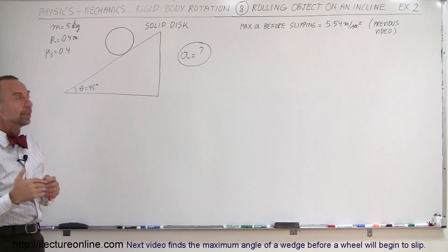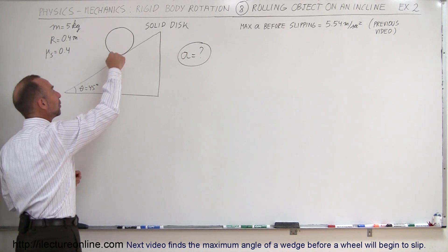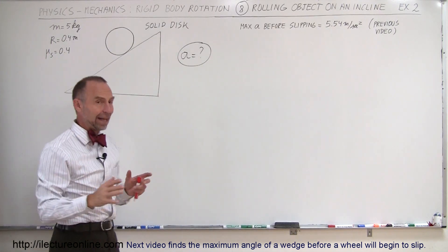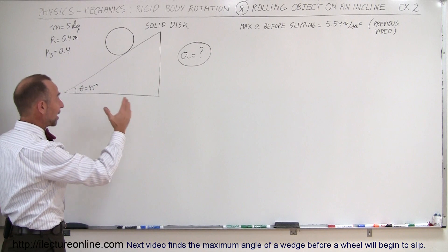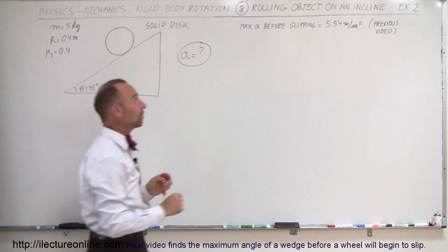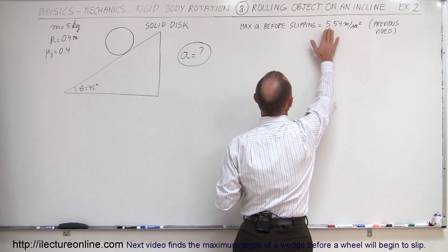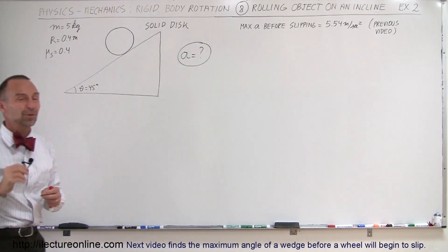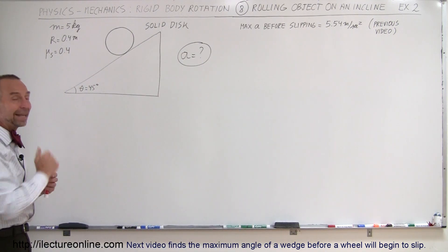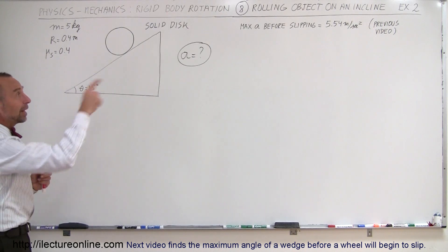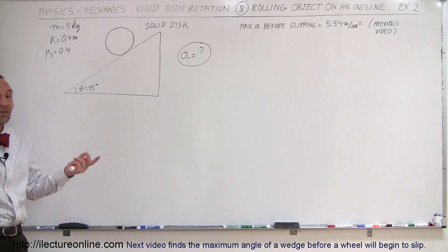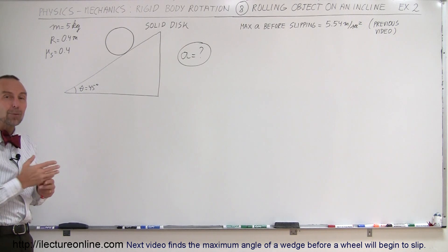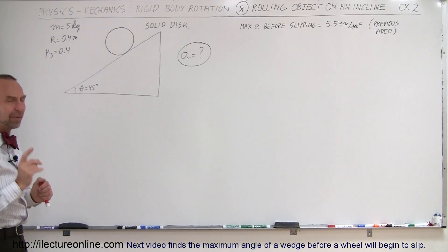We're going to assume that the disc will not slip — it will actually roll down the hill. In the previous example we had the very same parameters, and we determined that the maximum acceleration before it begins to slip is 5.54 meters per second squared. So we'll go ahead and calculate the acceleration. If it's greater than that, then the disc is actually slipping. For now, we assume it's not going to slip and see what happens.